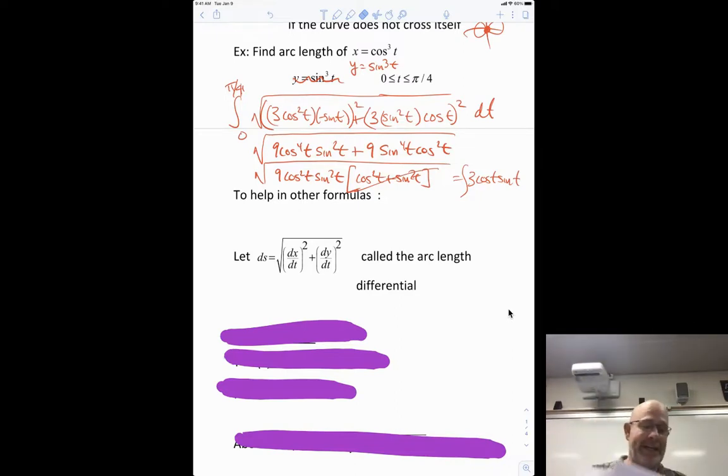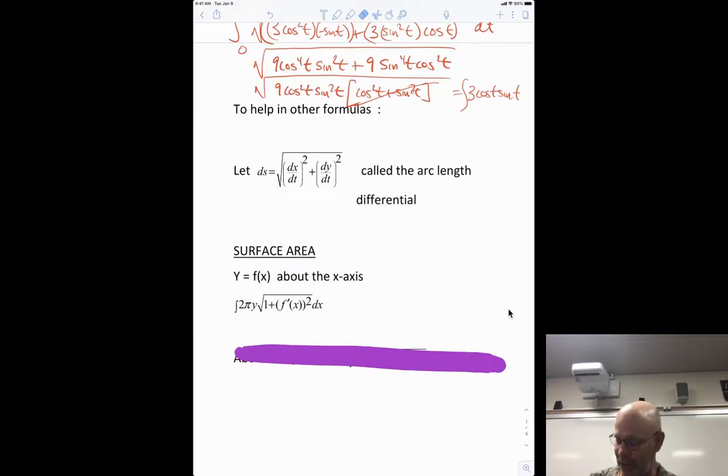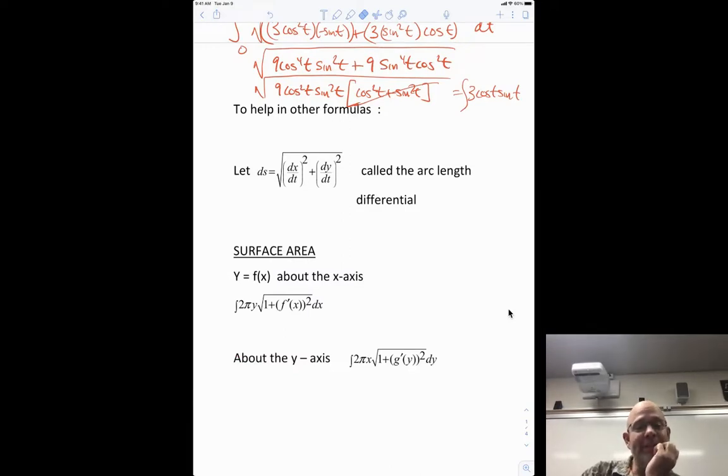We actually call this an arc length differential, this thing square root of dx dt squared plus dy dt squared. We call it arc length differential because we're going to use it in another formula. So if you just think about it as being an entity by itself, it can be a little bit helpful. And other problems like what's coming next. So you may remember surface area. So next we're going to do surface area revolving. So this is just a review of what we did in chapter eight. If we revolve y equals f of x about the x axis, it's 2 pi y times that arc length formula, right? 1 plus the derivative squared. And then if we did about the y axis, it's 2 pi x times 1 plus the derivative squared in terms of y, right? So around the y axis, it had to be in terms of y. Around the x axis, it had to be in terms of x. So this is from chapter eight. The formulas were exactly the same in this chapter.